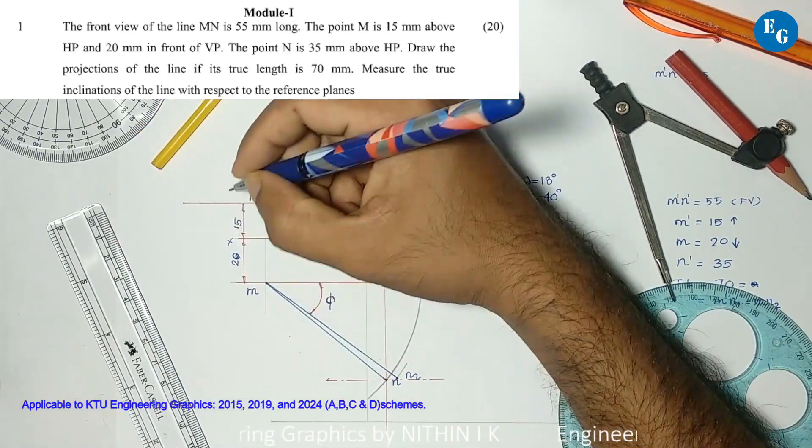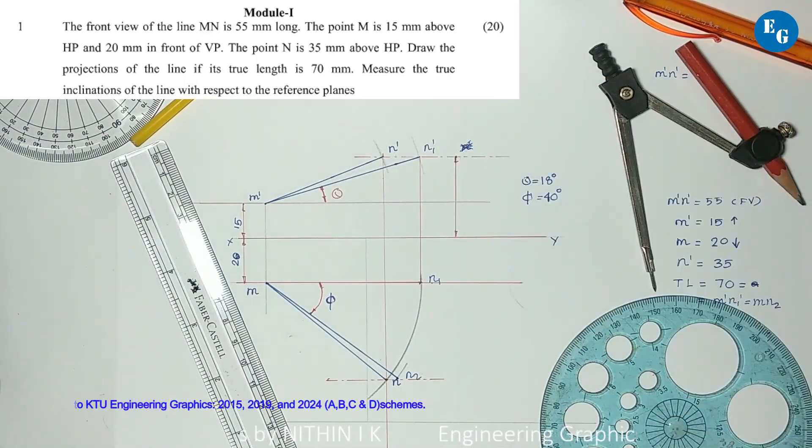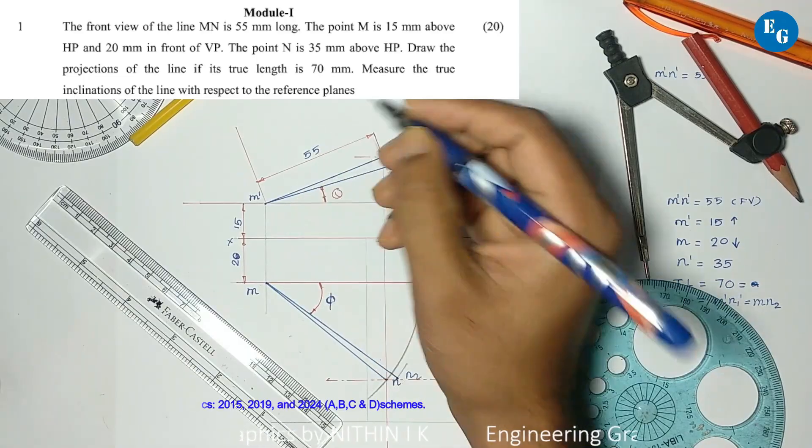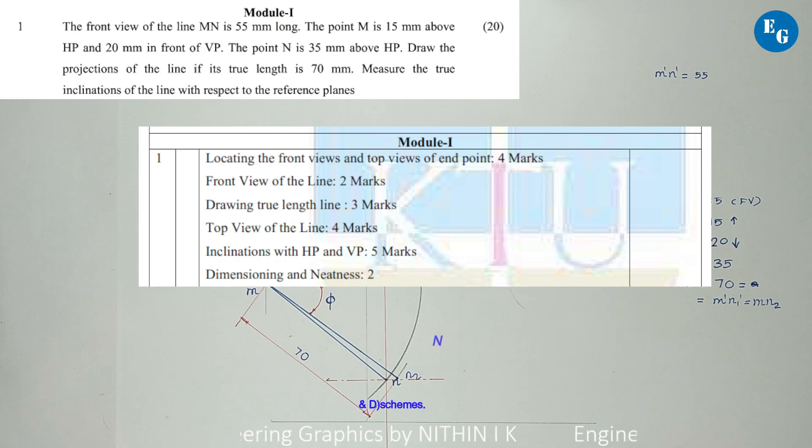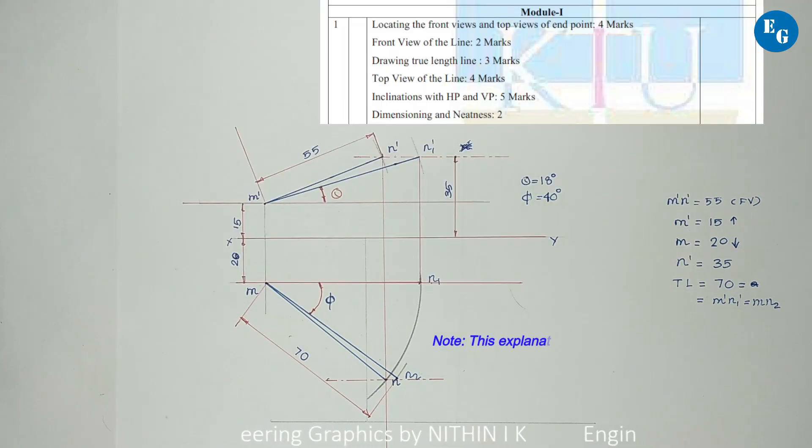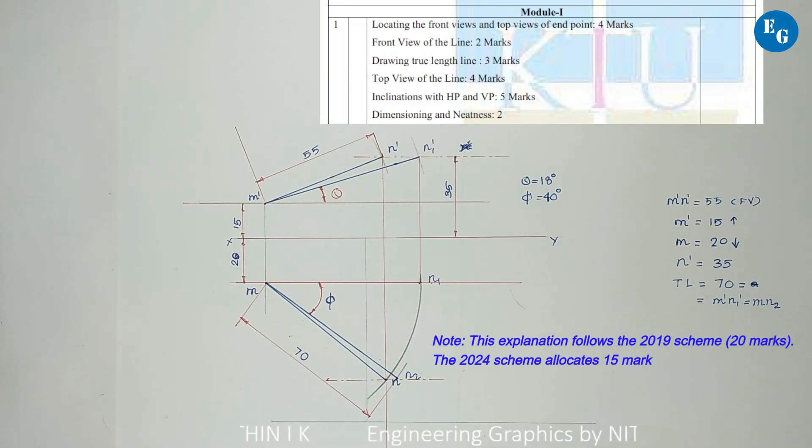Mark the given data dimensions. Problem complete. Locating front views and top views is 4 marks. Front view of the line is 2 marks. Drawing the true length m dash n1 dash is 3 marks, plus 2 marks for locating equals 5 marks. Top view of the line MN located is 4 marks. Inclination with HP and VP is 5 marks. Finding MN2 and measuring theta and phi gives 5 marks total. Dimensioning and neatness is 2 marks.